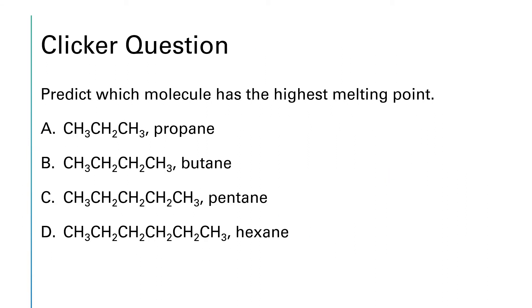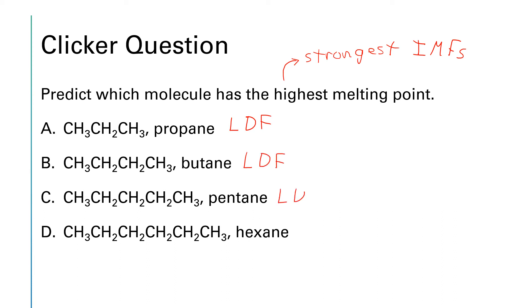This question asks us to identify the compound with the highest melting point. The highest melting point means the strongest intermolecular forces. After pausing to analyze, you'll find that London dispersion forces are the dominant intermolecular force in all of these compounds — they are all composed entirely of carbon and hydrogen, meaning nothing polar is present anywhere.